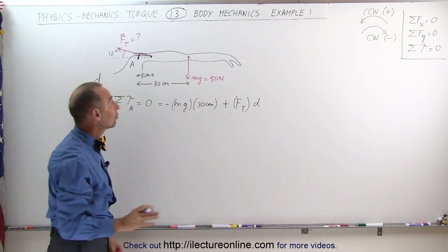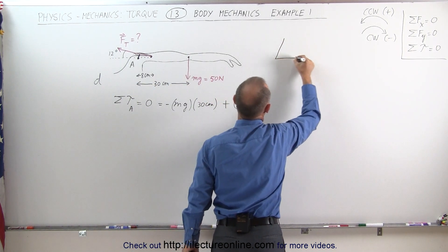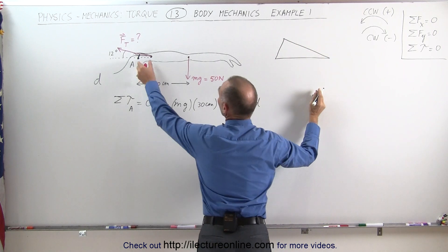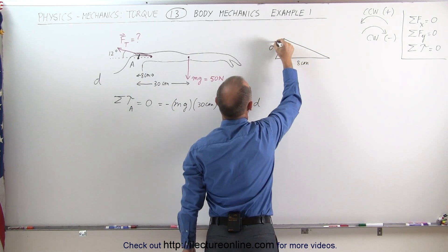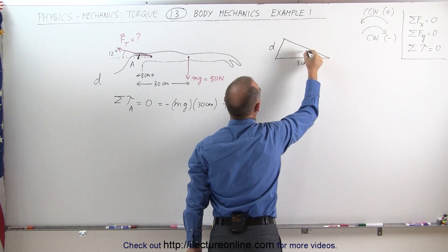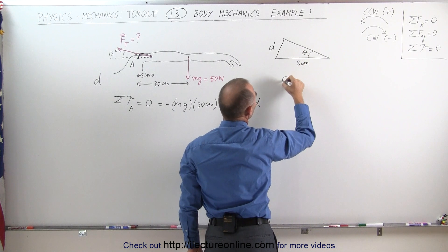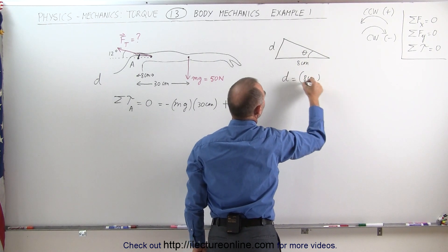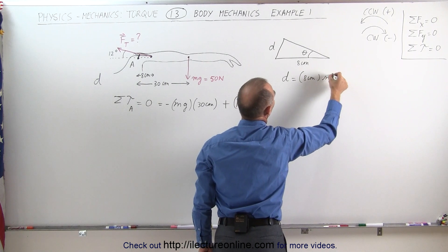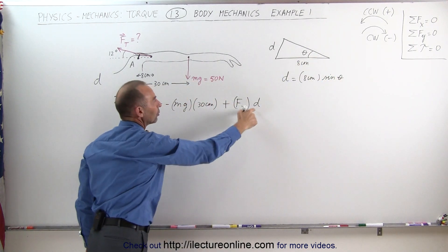Let me redraw that so you can easily see what it looks like. So here's the triangular shape that we're talking about. This distance here, that's the hypotenuse, that is 8 centimeters. This is the distance we're trying to find, and this is the angle which is opposite to the distance D. We can then see that D is equal to the hypotenuse of 8 centimeters times the sine of theta, which in this case is 12 degrees. And that would then go in here.